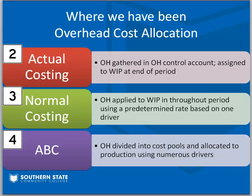If we look at where we've been up to now, everything we did in chapters two, three, and four dealt with overhead cost allocation — trying to figure out how to take the accumulated overhead and apply it to products. In chapter two we talked about actual costing, really only used when there's a small amount of overhead. In that system we gather all overhead in one overhead control account and assign it to work in process when the period or job is done. The shortcoming was that it puts us about a month behind in expressing overhead. In chapter three we talked about normal costing, where we developed a budgeted overhead rate and used one cost driver to apply overhead to work in process as the period went along.